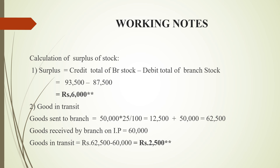The cost price is 50,000 rupees. Goods sent to branch at invoice price comes to 62,500 rupees. Goods received by branch at invoice price is 60,000 rupees. So the balance of 2,500 rupees is goods in transit.